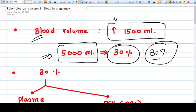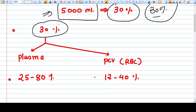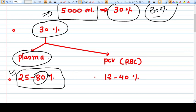So the blood volume is increased by 30 percent. Now in this 30 percent increase, the plasma increases by 25 to 80 percent. So remember, even 80 percent increase can be there in plasma. And in the RBCs, that is packed cell volume, if you compact all RBC that will give you the packed cell volume PCV. So PCV will be increasing 12 to 40 percent. Remember these figures.